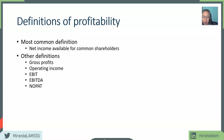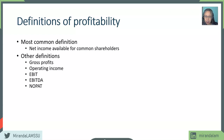Another term is NOPAT, which is net operating profit after tax. All of these are non-GAAP measures, which means they are not required on audited financial statements and may or may not be available for all companies. Some companies voluntarily report EBIT or NOPAT; others simply report revenue and net income. So be mindful that some of these are non-GAAP measures.